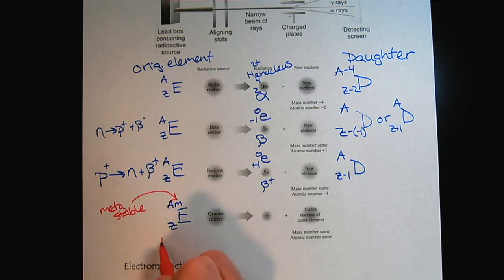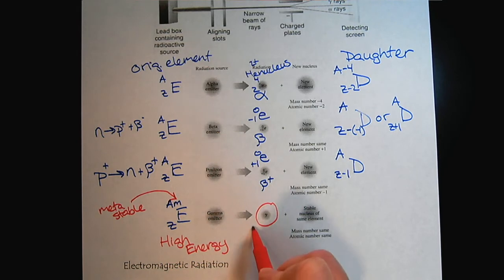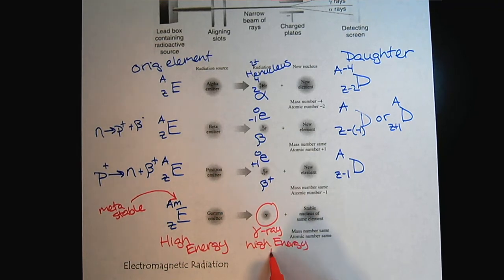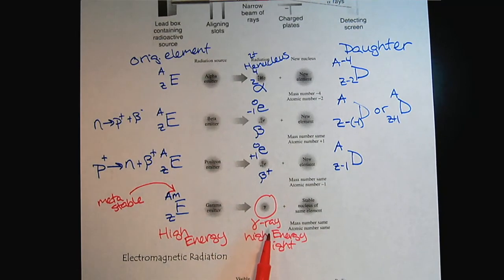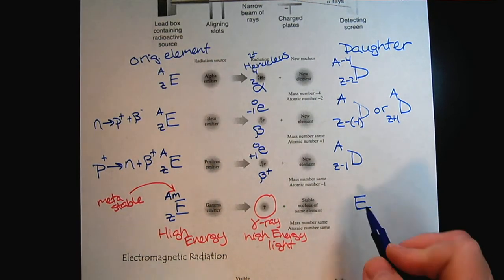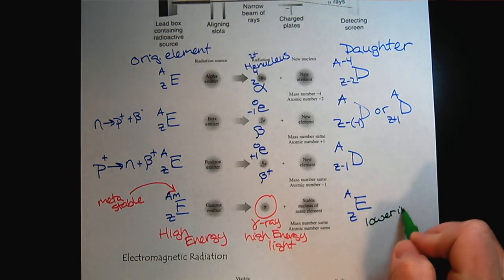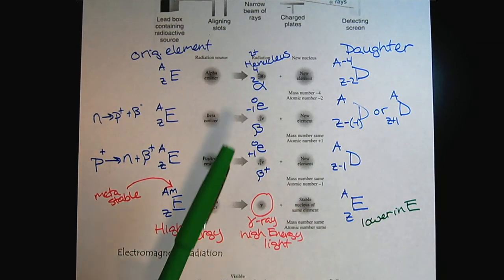And what happens here is that we have a nucleus in a high energy state. And so it's not going to release any particles. What happens is there's a gamma ray, high energy light. So the excited or high energy nuclear state will release energy as a gamma ray. And so notice then that the daughter is the exact same element. It's just now there's no more meta, it's lower in energy.